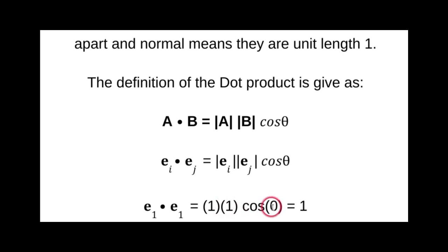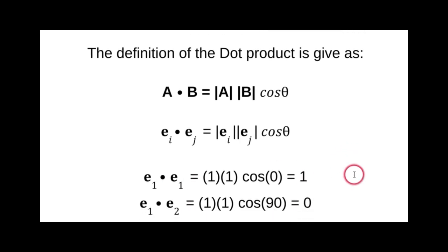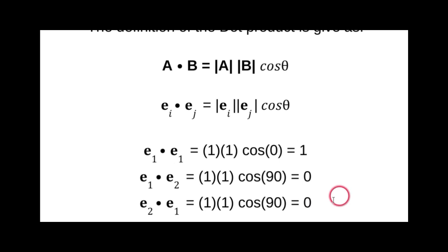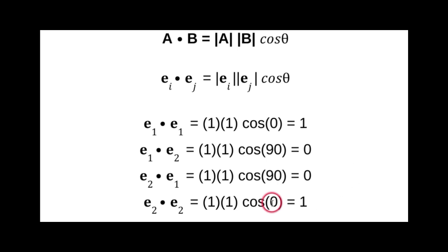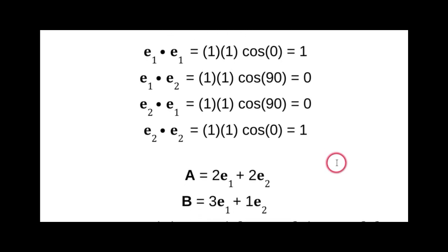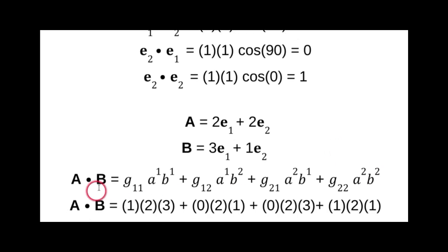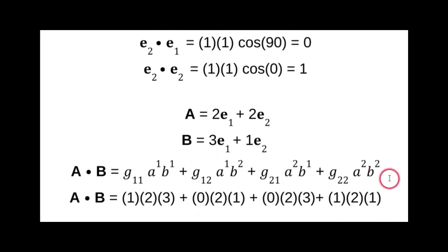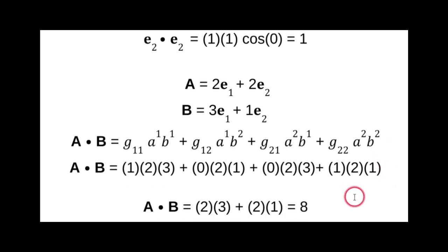For e₁·e₁: both are unit vectors so magnitudes are 1, and the angle between them is zero, so cos(0)=1, giving g₁₁=1. For e₁·e₂: they're orthogonal, so the angle is 90°, cos(90°)=0, giving g₁₂=0. Similarly g₂₁=0 and g₂₂=1. This is called the identity matrix. In Cartesian coordinates the metric tensor is the identity matrix, so all cross terms vanish and the dot product a·b equals 8.